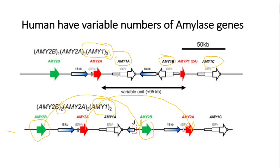ERV activity — retroviral activity — can result in the duplication of portions of genomes. The fact that you see ERV sequences here is usually an indicator, even if you didn't see it happen directly. We're looking at people's genomes today, so the presence of those ERVs is very good evidence that these portions of the genome have been copied in the not-too-recent past.